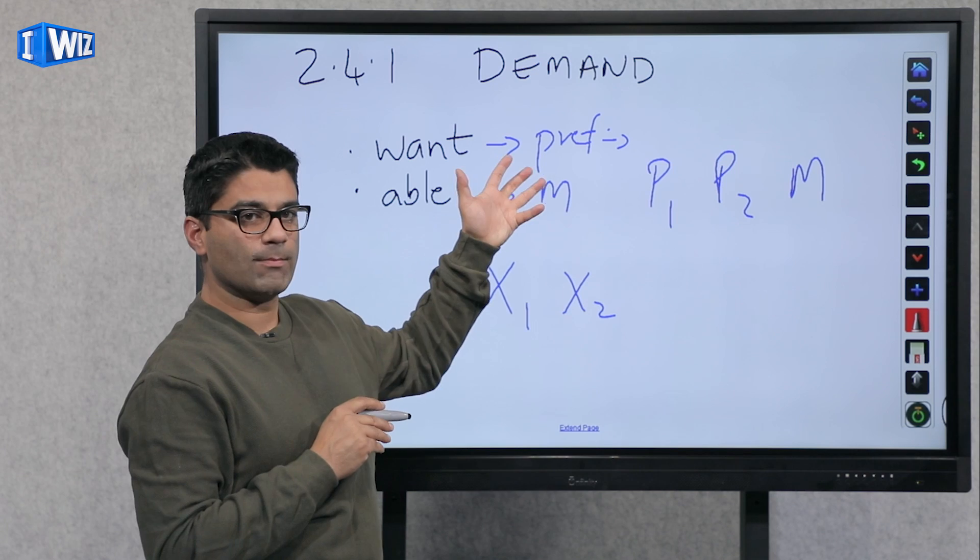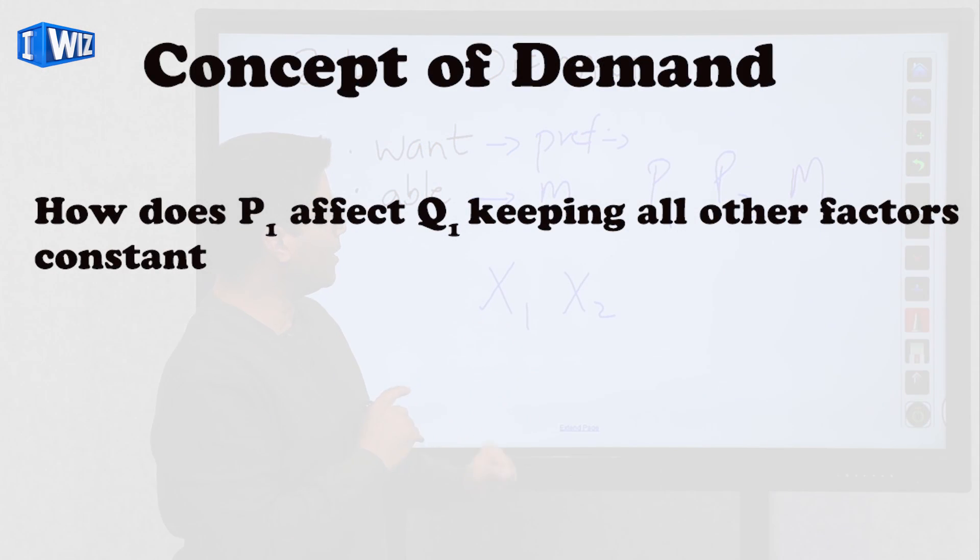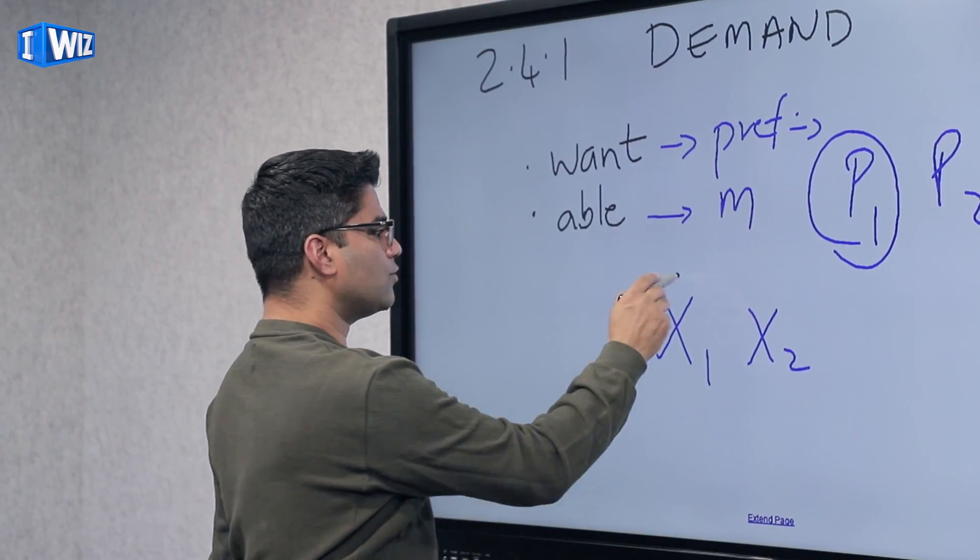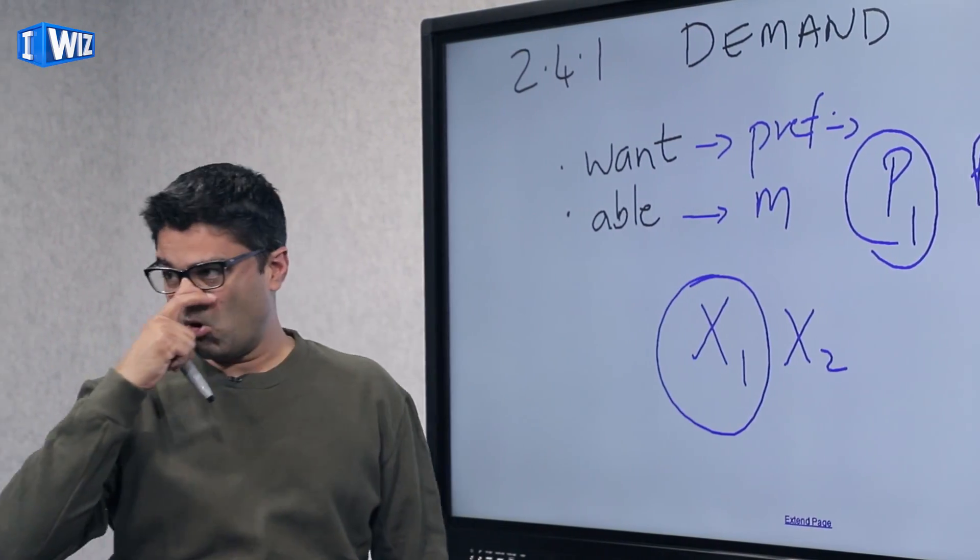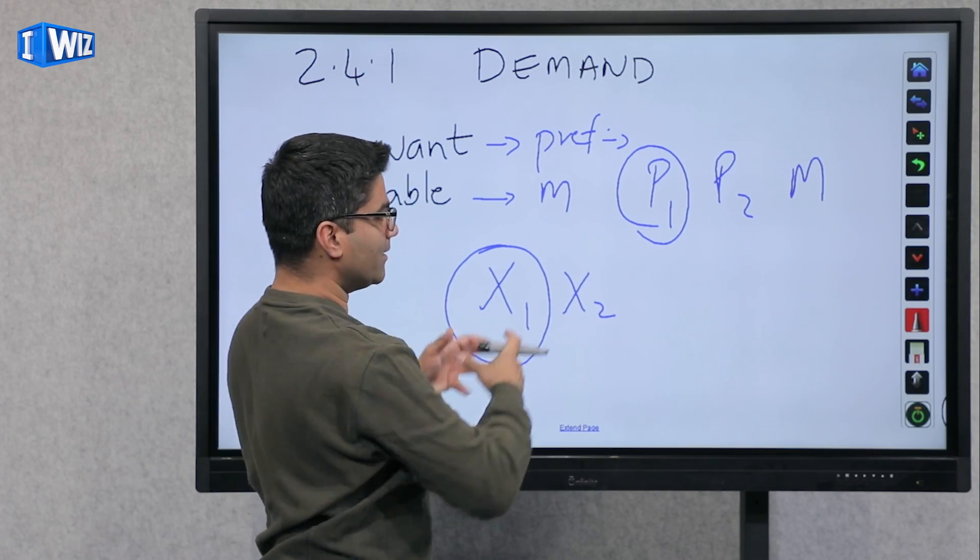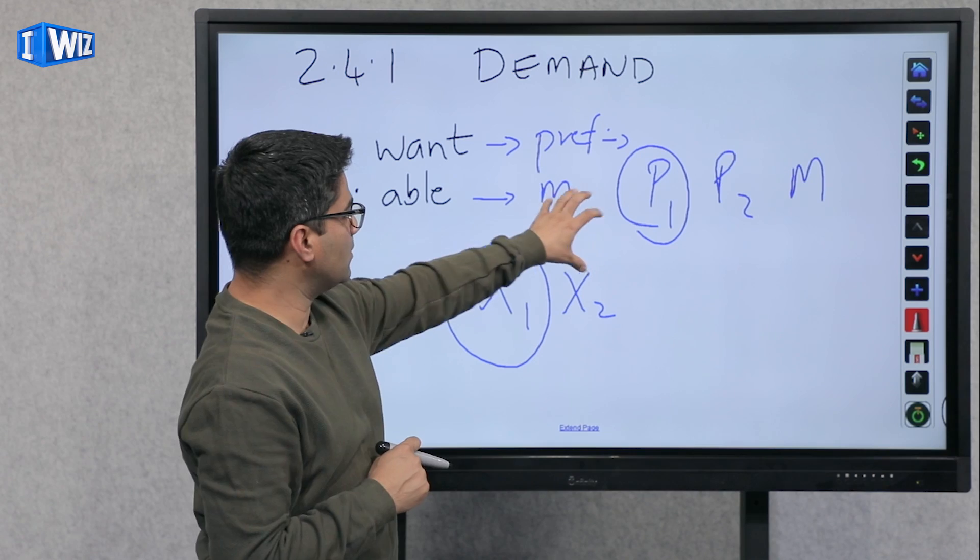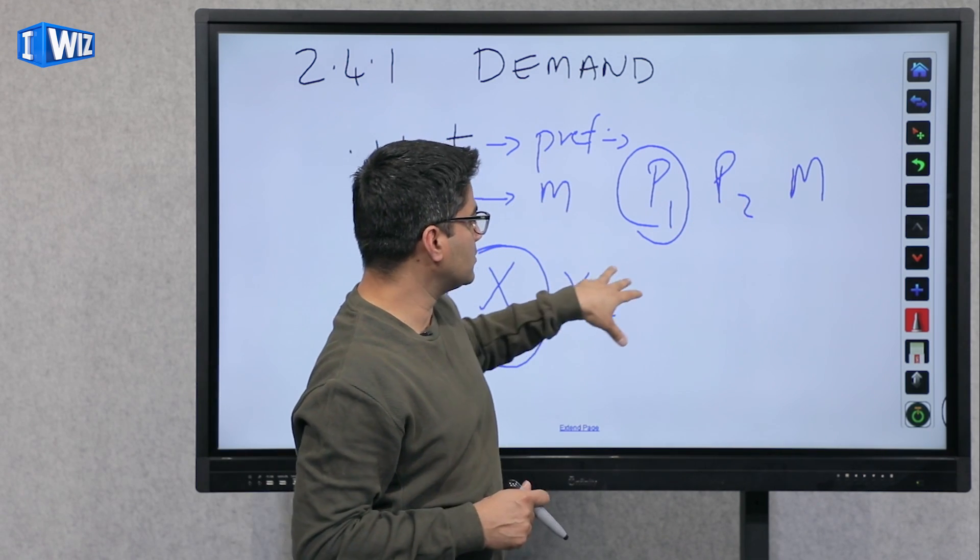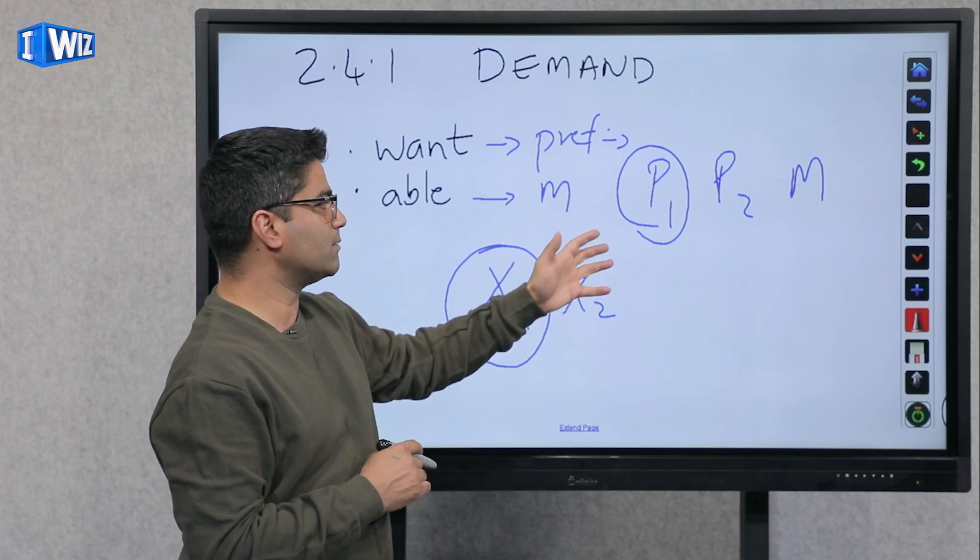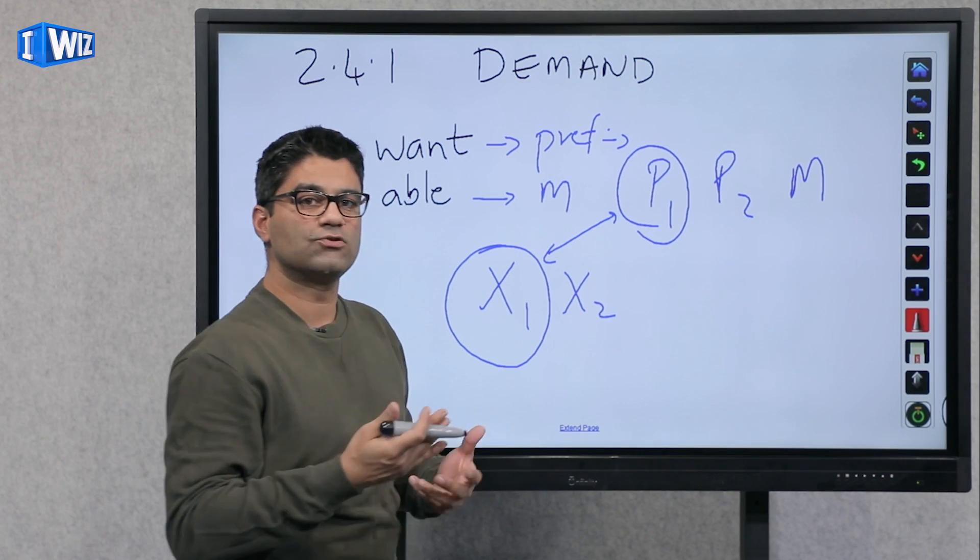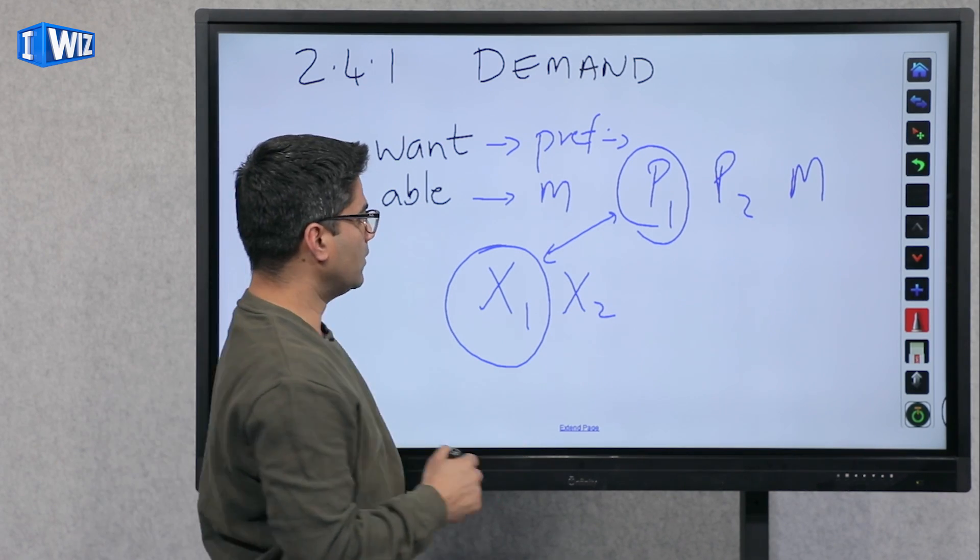So when we look at what we mean by demand, the variables that we are analyzing in more detail than what we've done before is how does price of good one, when that changes, how do we change how much more or how much less of X1 we are going to buy? So again, keeping everything else in mind, that's what the demand side refers to. And then in the next few videos, we will start saying, okay, how do we buy more or less when our income changes and things like that. So this relationship correlates to what we call demand.